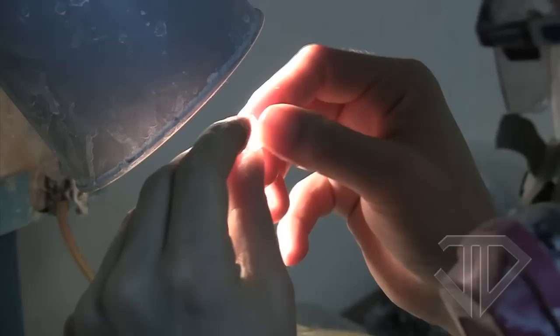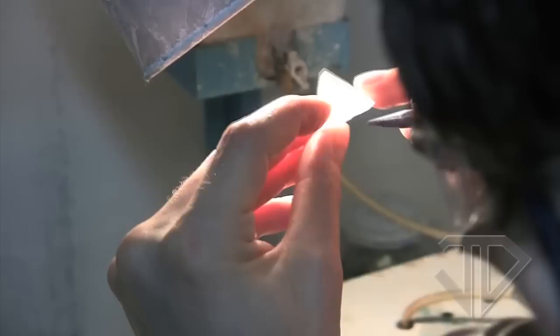The first step is to examine the gem rough for any inclusions. If there are inclusions near the center of the gem, often it is best to saw the piece into multiple smaller gems.